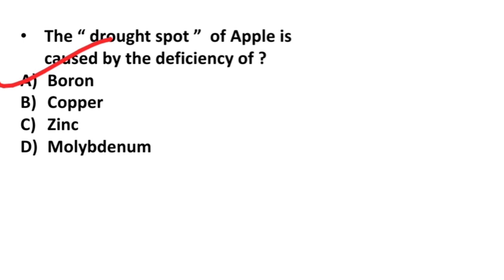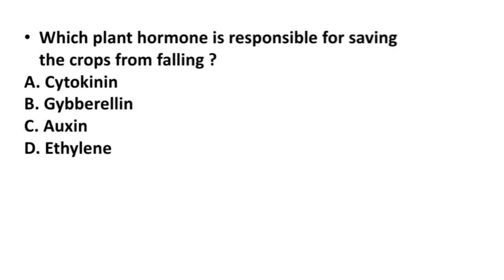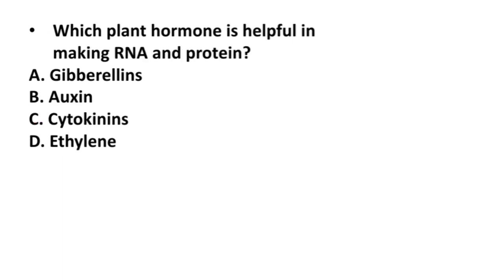Which plant hormone is responsible for saving the crops from falling? Cytokinin, gibberellin, auxin, or ethylene? Its correct answer is option C, auxin.